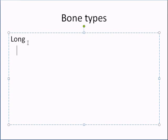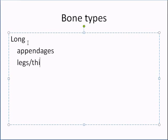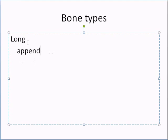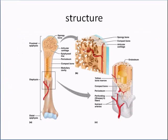Long bones are what you typically find in your extremities — your appendages. Basically, your legs, thigh, and arms. These are your long bones, and we just saw a picture of a long bone a moment ago.